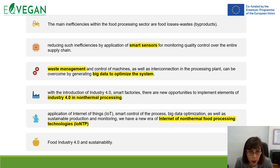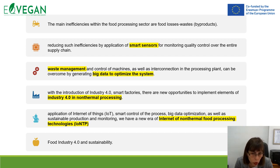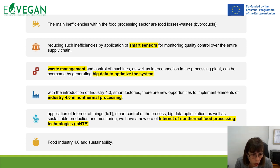The idea is to use smart sensors to monitor quality and reduce inefficiencies, and to use big data to optimize the system and manage waste. We need to think about Industry 4.0 and 5.0 and move toward smart factories. There are new opportunities to implement elements of Industry 4.0 in non-thermal processing — applying Internet of Things, smart control of processes, big data optimization, and sustainable production and monitoring — in the new era of food industry 4.0 and sustainability.